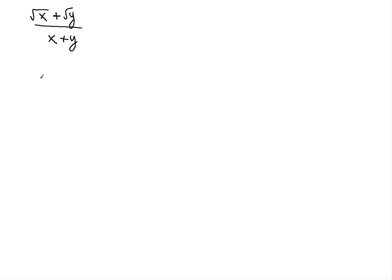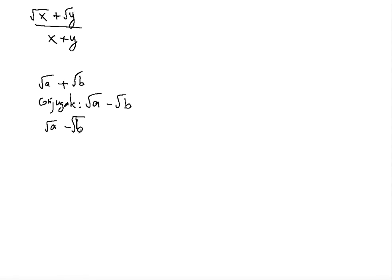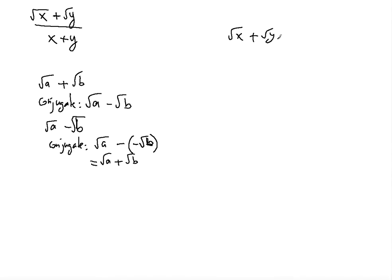Now to get rid of the radicals in the numerator, you have to think of the conjugate of the numerator. If we have a form like radical a plus radical b, the conjugate of that will be radical a minus radical b. And the same thing for radical a minus radical b — the conjugate of that will be radical a plus radical b.